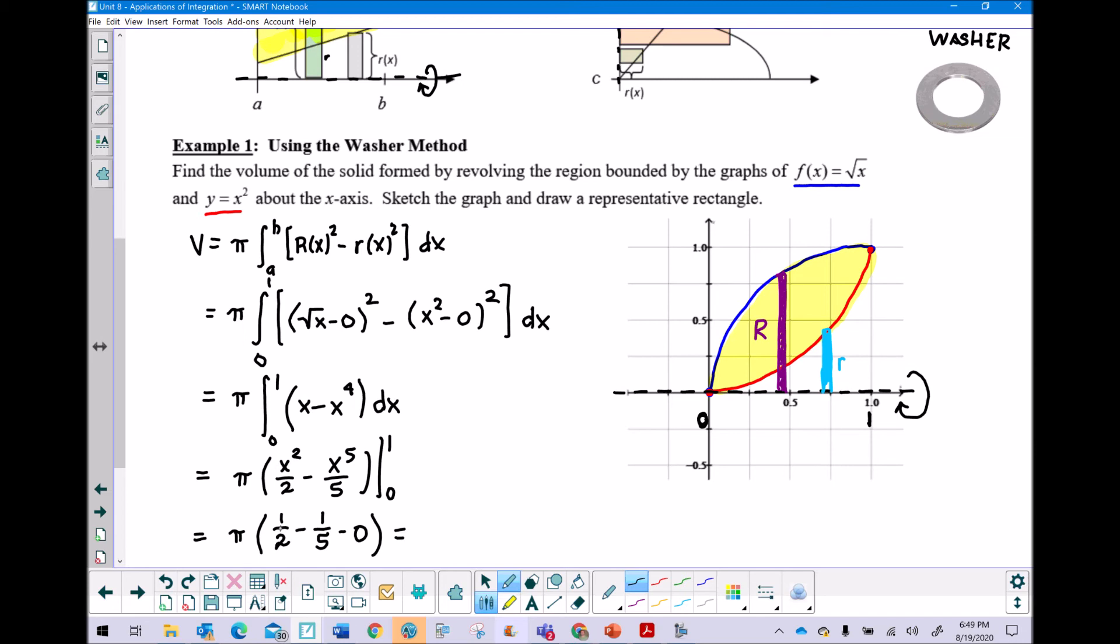And then I believe that one half minus one fifth is indeed three tenths, and the pi we can just put on the top, or you could say three tenths times pi, and that would be your volume. Now I want to show you a visual demonstration of the shape that we just found.